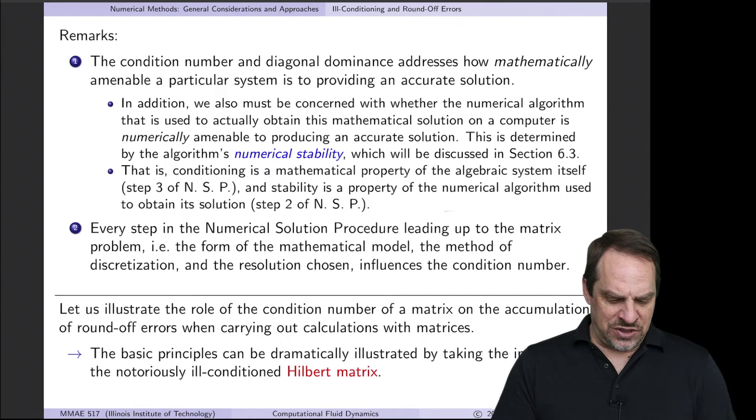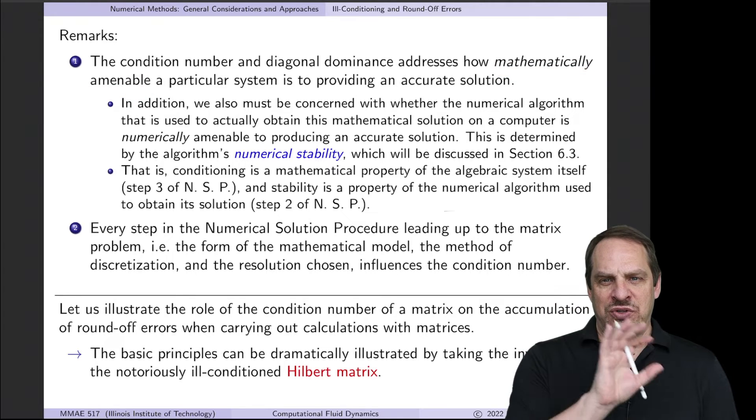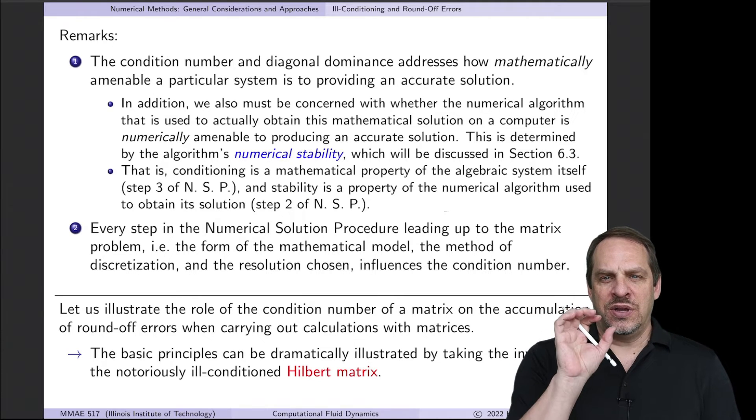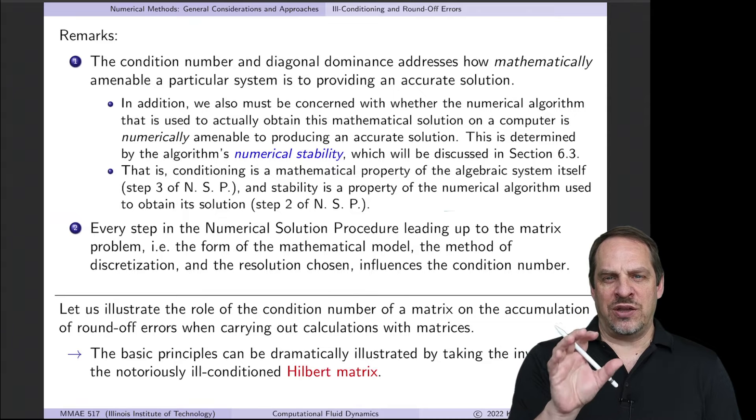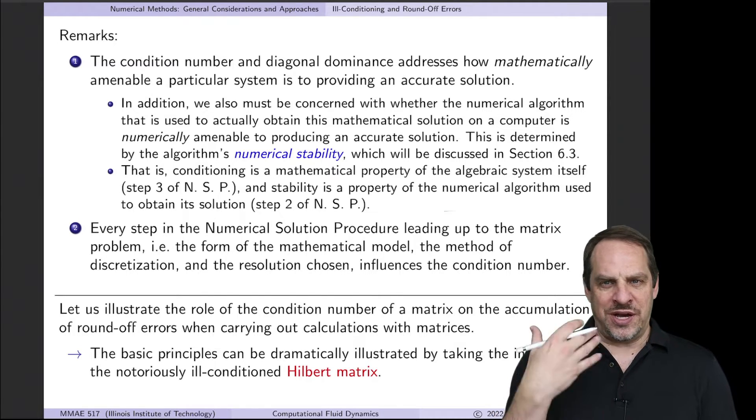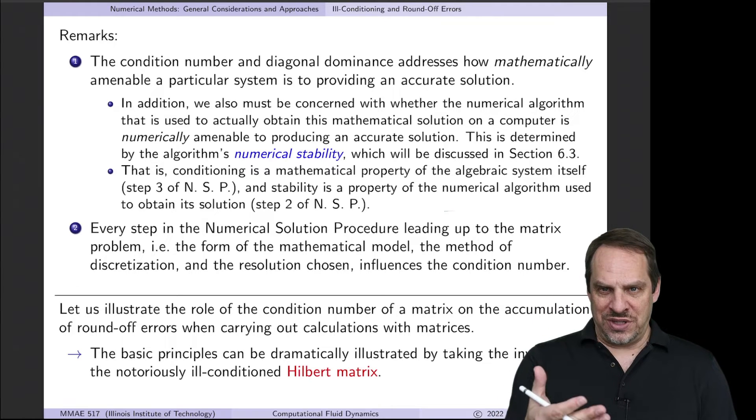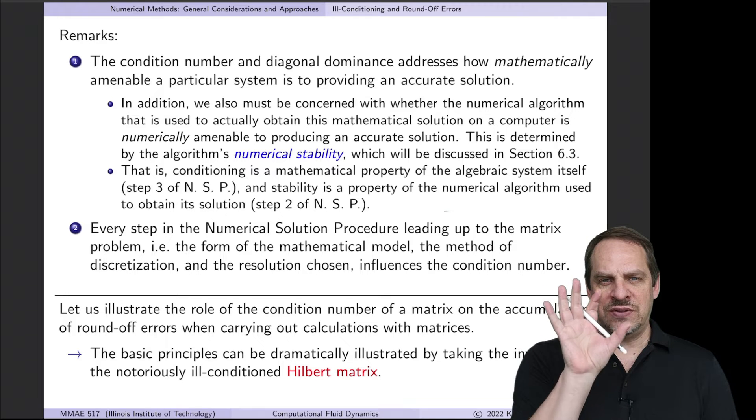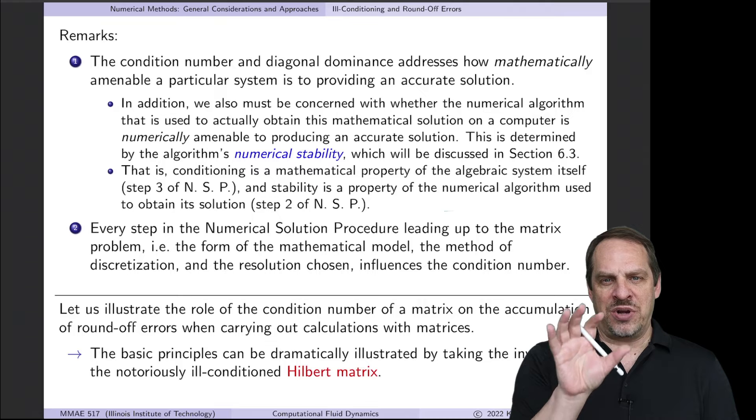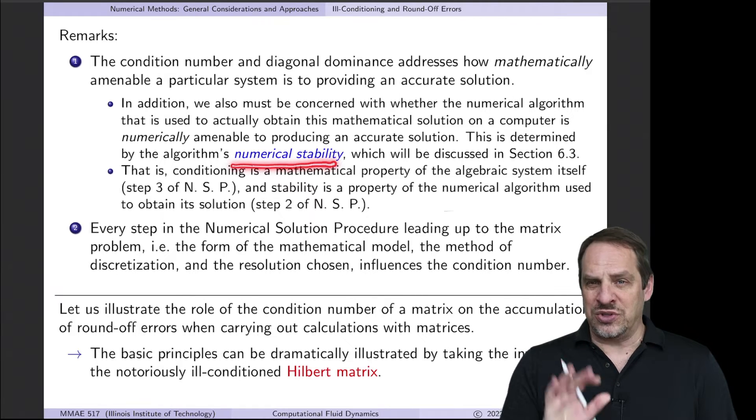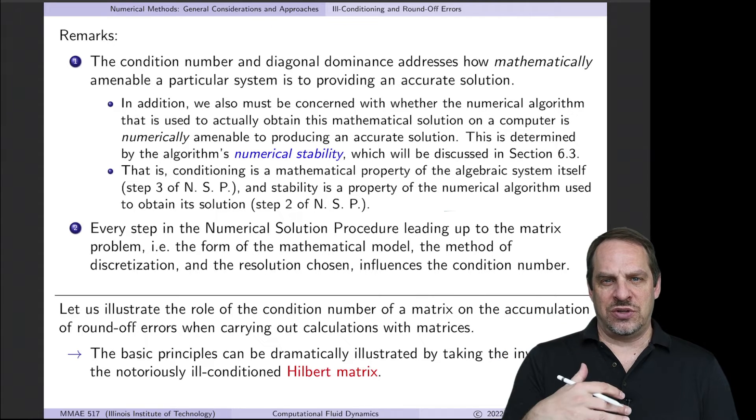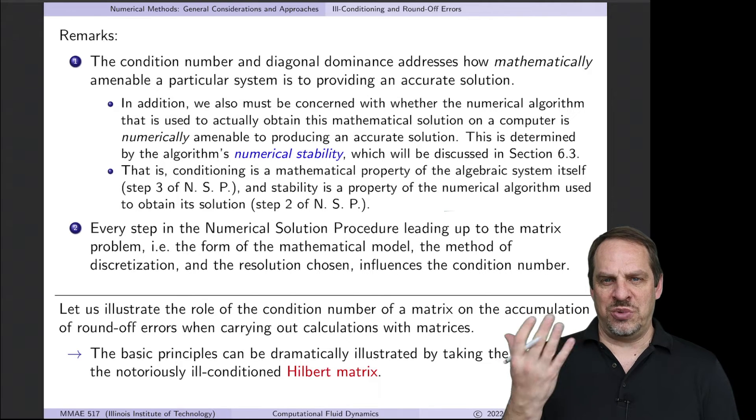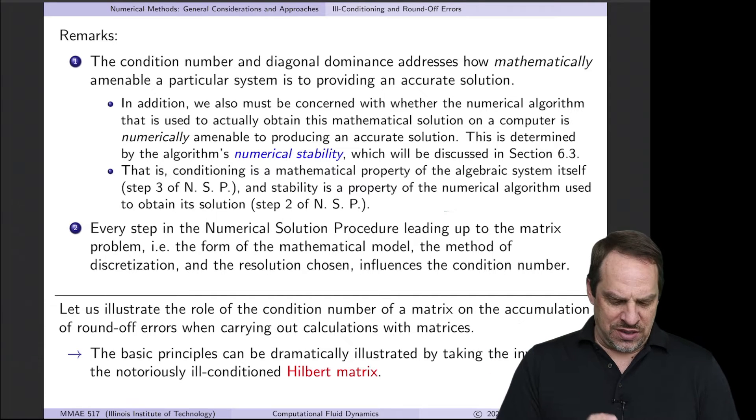Let me make a few comments about this relative to the condition number. In both cases, they are addressing how mathematically amenable a particular system is to solutions. So in A U equals B, we want to know how likely is it that we will get a good, accurate solution of that system of linear algebraic equations. It's not addressing the algorithm to get that solution. It's not addressing the numerical stability of that algorithm. It's just looking at the system of equations by itself, and this is a mathematical property of that system. So the additional question of numerical stability, which still is related to these round-off errors, because that's what instigates the numerical instability, that is a separate question. That is a separate issue that we're going to have to address later on when we get to situations where numerical stability could arise.